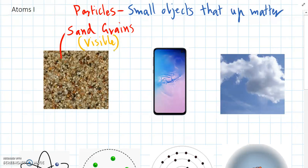But the particles that make up other objects, like the particles making up the glass on the screen of your phone, or the particles in the air, we can't see these because they're so small.